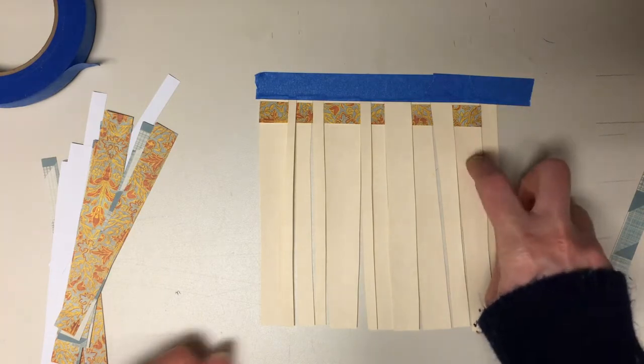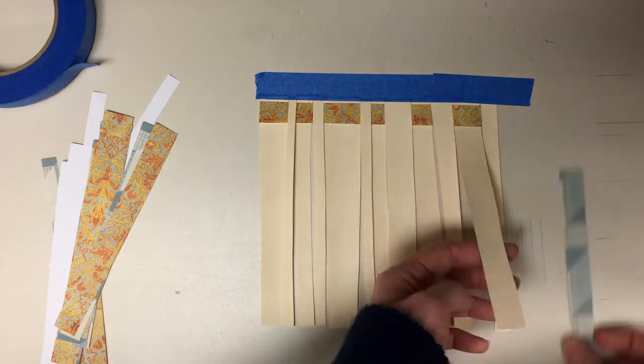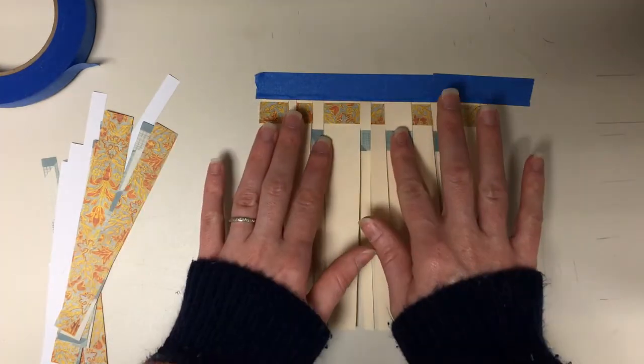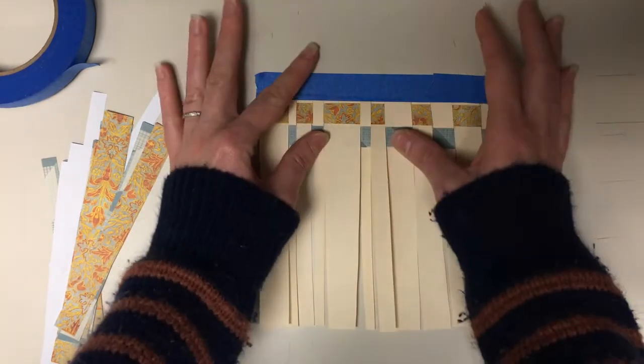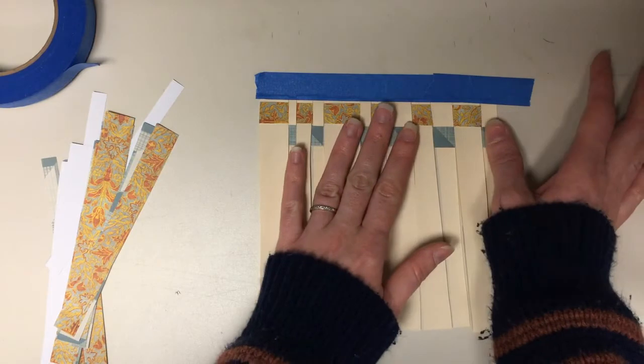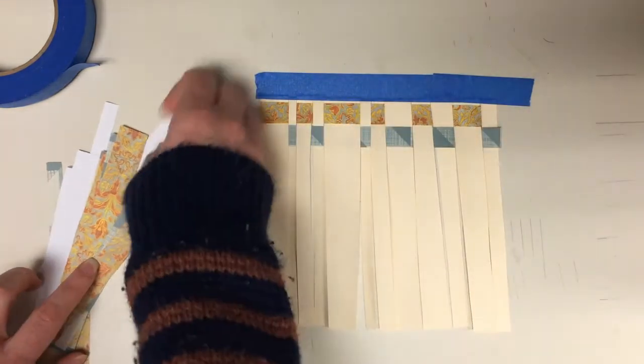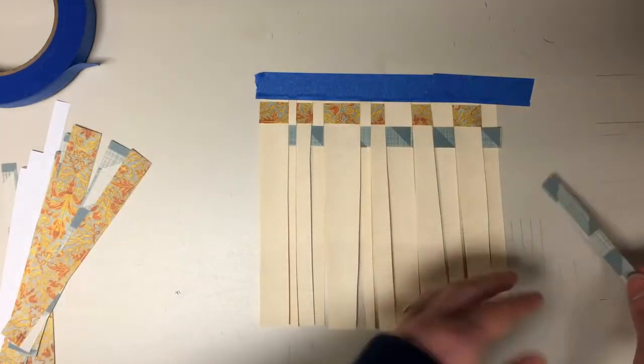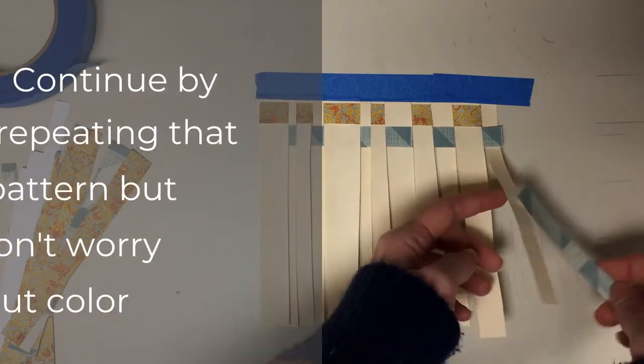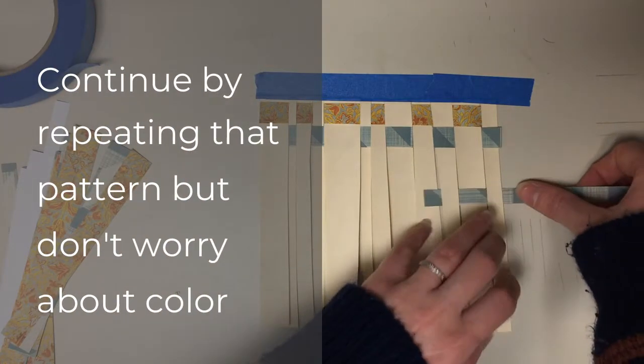My paper went underneath this one, so it's going to go over this one and under the next. Then slide that up so that it is visually touching the one before. Now I'm going to do my third row, which alternates my second row.